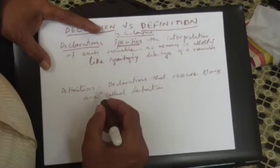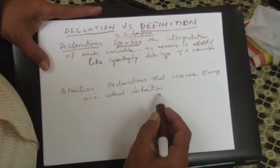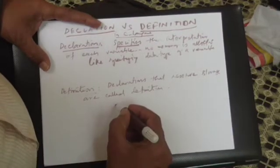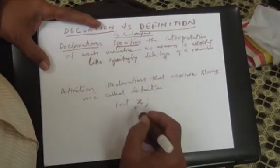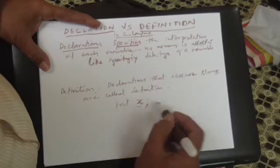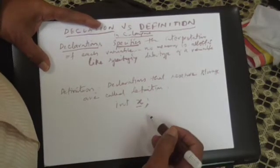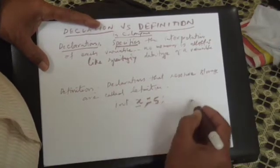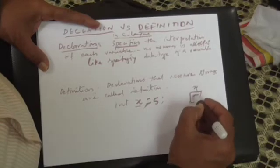But coming to definition, declarations that reserve storage are called definitions. For example, in C language, if you write `int x`, the memory is allocated at runtime for this variable x, so it is a definition only. And if you say it is 5, the memory is allocated and the value is 5 here.